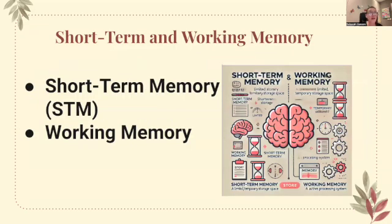Short-term memory is when information that attracts attention in sensory memory moves into short-term memory. The STM holds information temporarily for processing and is limited in capacity — it typically holds about seven plus or minus two items. Information here can be retained longer through processes such as rehearsal. Working memory is an active stage where information in short-term memory is manipulated. It's used for cognitive tasks such as problem solving, reasoning, and comprehension, and it integrates information from short-term memory with data retrieved from long-term memory.